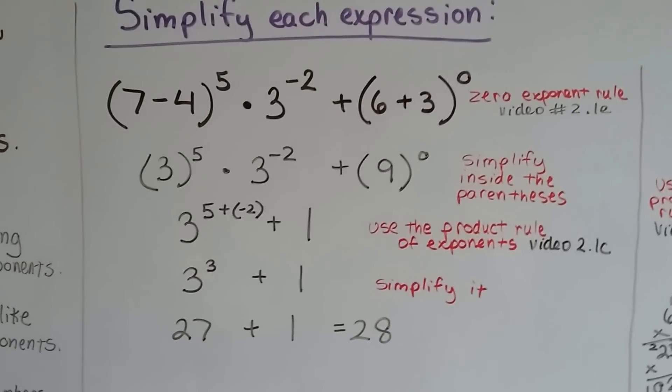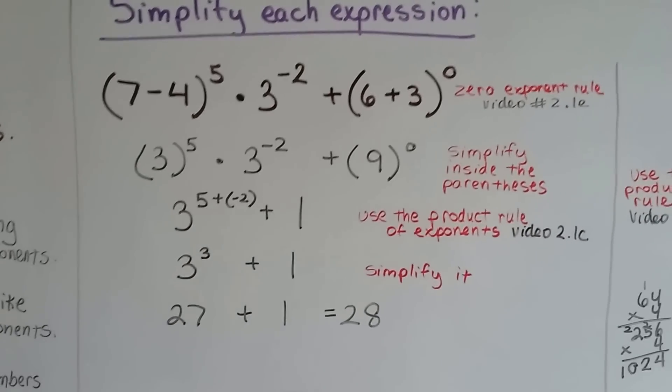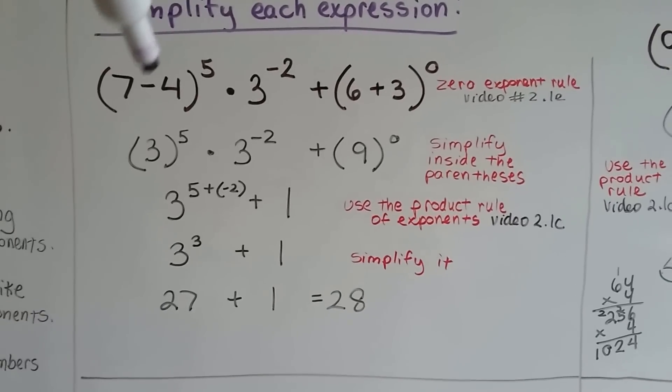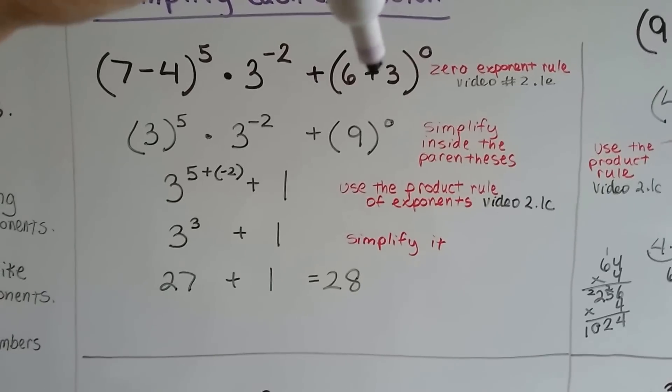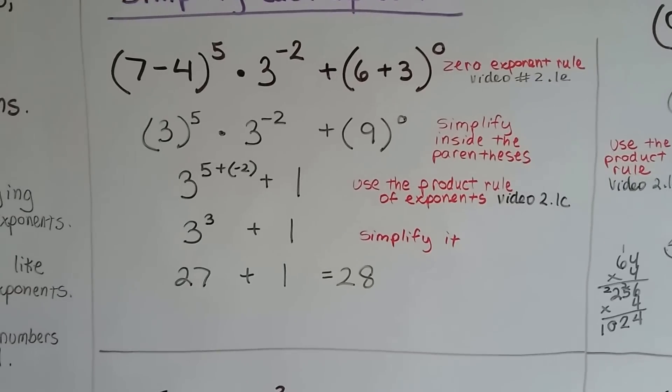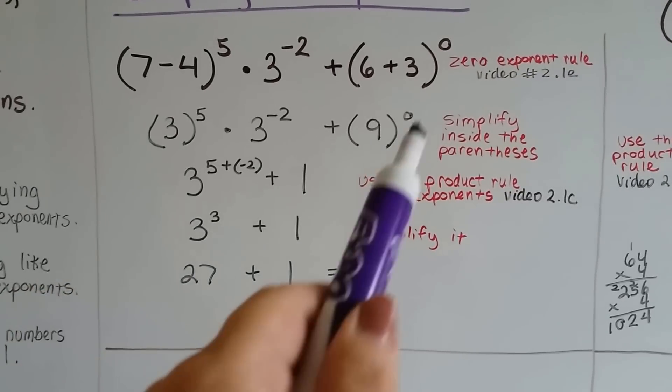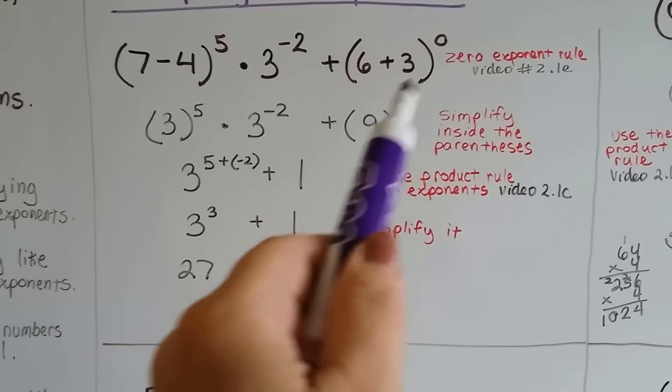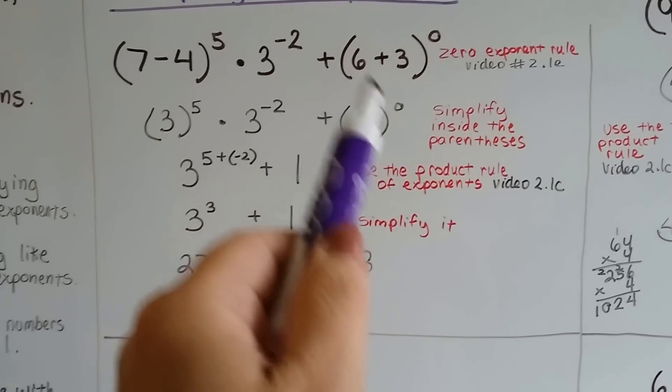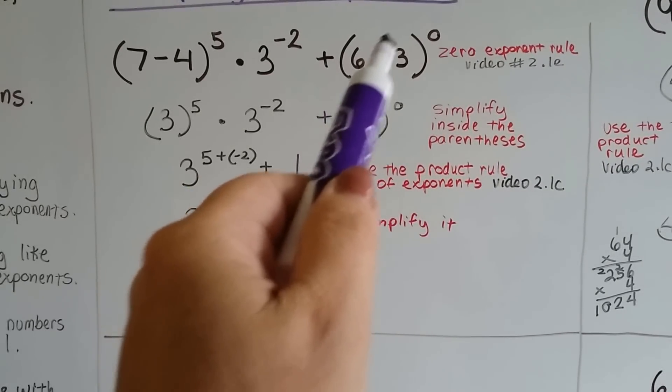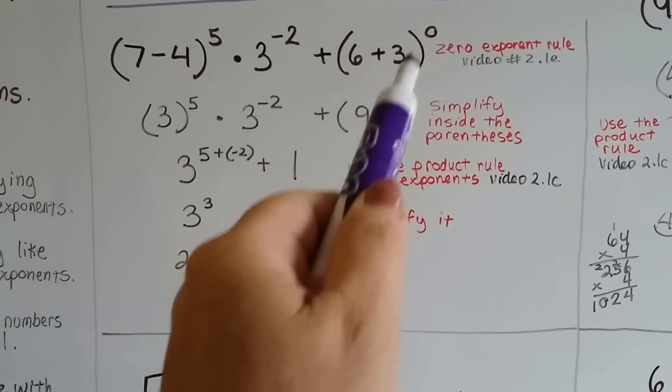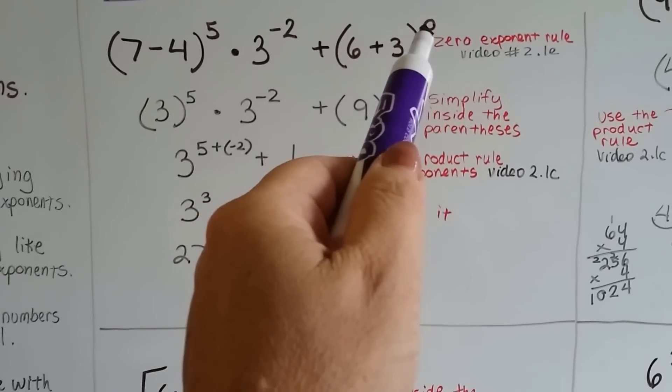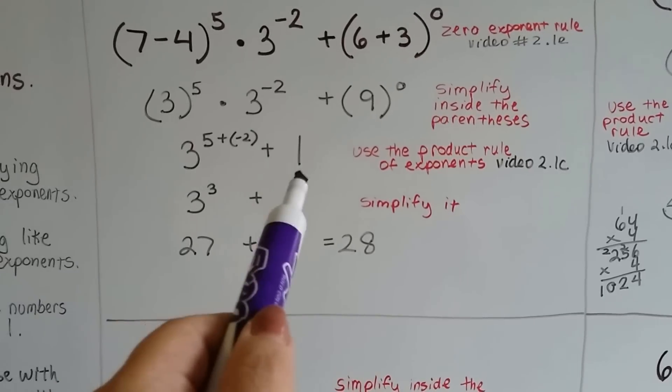Here's the first one we're going to try doing. Simplify each expression. We've got, in parentheses, 7 minus 4 to the 5th power times 3 to the negative 2 plus 6 plus 3 to the 0 power. So, the first thing we're going to do is simplify inside the parentheses first. But this is the zero exponent rule. So, it doesn't matter what is inside of these parentheses. If it's got a zero exponent, it's going to equal a 1.